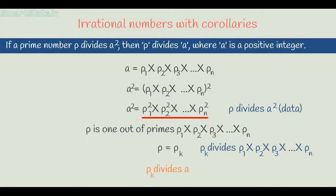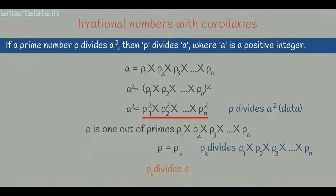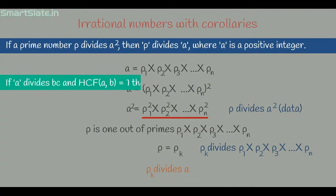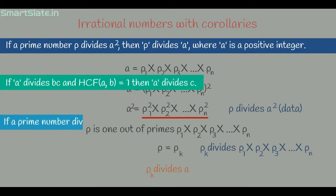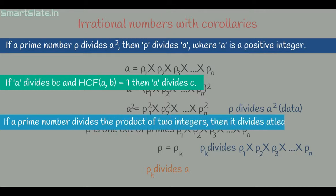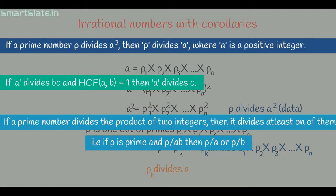There are two more corollaries you should remember. First: if a divides bc and the HCF of a and b is 1, then a divides c. Second: if a prime number divides the product of two integers, then it divides at least one of them — that is, if p is prime and p divides ab, then p divides a or p divides b.